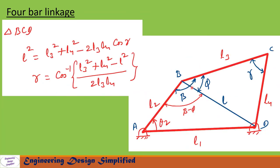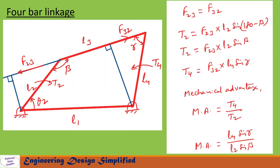Now let us apply the cosine rule for triangle BCD to find gamma. From this triangle: l squared equals l3 squared plus l4 squared minus 2·l3·l4·cos(gamma). So gamma equals cos inverse of (l3 squared plus l4 squared minus l squared) divided by (2·l3·l4). Now let us see the mechanical advantage equation.